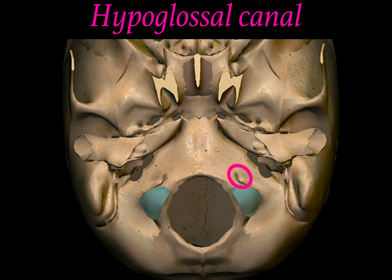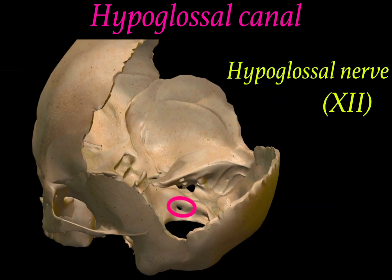Then we have the hypoglossal canal, which is located anteriorly to the foramen magnum. Through the hypoglossal canal, the 12th cranial nerve — the hypoglossal nerve — passes.